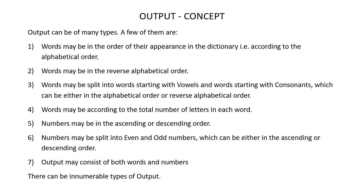In the output, words may be according to the total number of letters in each word. In the output, numbers may be in the ascending or descending order. In the output, numbers may be split into even and odd numbers, which can be either in ascending or descending order. The output may consist of both words and numbers. There can be innumerable types of output.